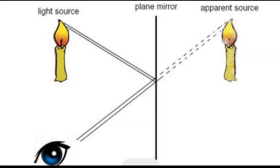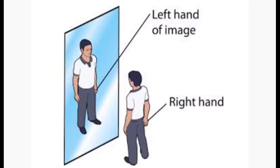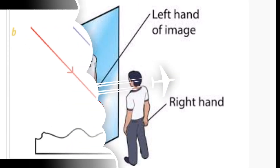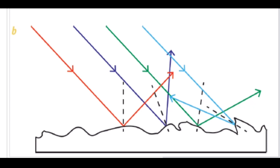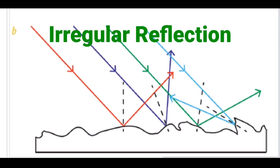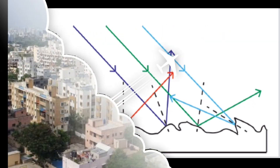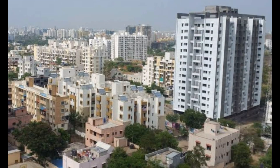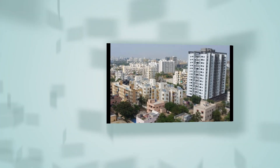Regular reflection creates an image of the object, such as in the case of a plane mirror. When light rays fall on a rough and irregular surface, they scatter here and there — this type of reflection is called irregular reflection. These scattered rays fall on all the objects in our surroundings and make them visible to us.